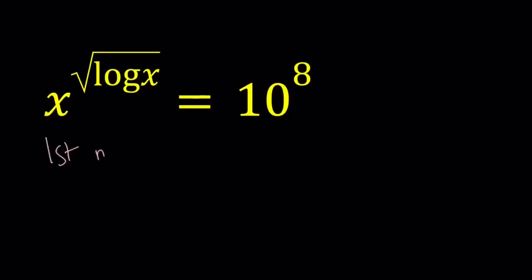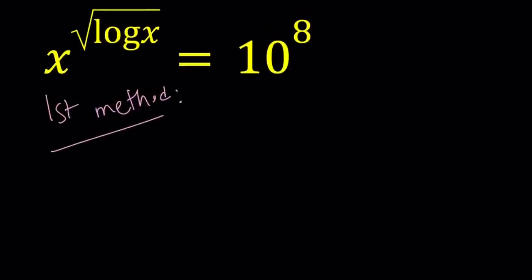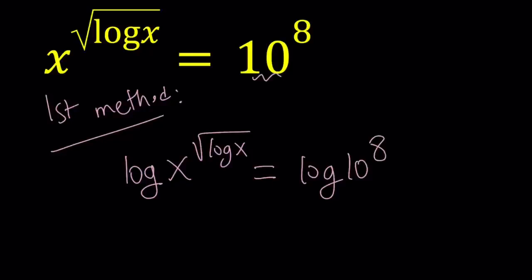My first method involves something commonly used. I'm going to log both sides, and log is basically base 10 here. When it's not written, it's usually base 10. And obviously the motivation is we have a base 10 here, so it makes sense.